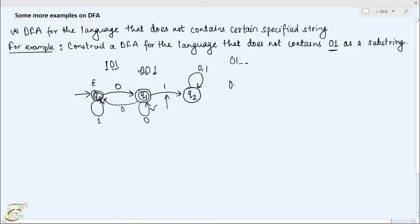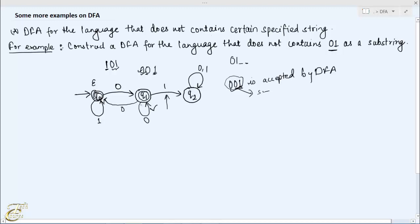Now let's see why we cannot make the transition from q1 to q0 on symbol 0 instead. In that case, the string 001 would be accepted by this DFA, since 0 from q0 leads to q1, another 0 from q1 leads back to q0, and reading 1 in q0 stays in q0 which is an accepting state. But 001 contains 01 as a substring, so it should be rejected. Hence we are not allowed to make that transition. Our correct DFA has all possible transitions defined, and this is our final DFA for this language.